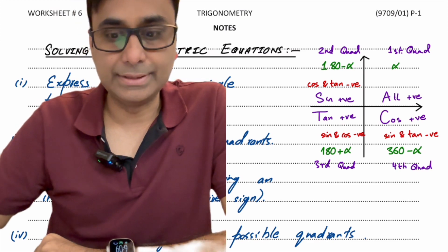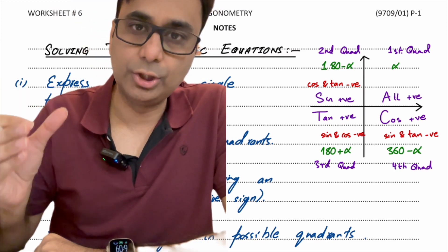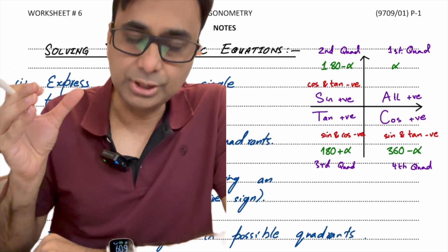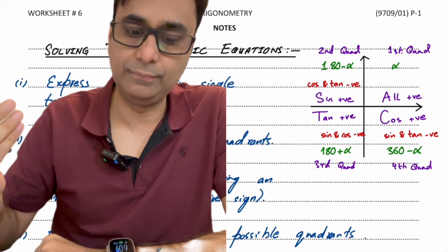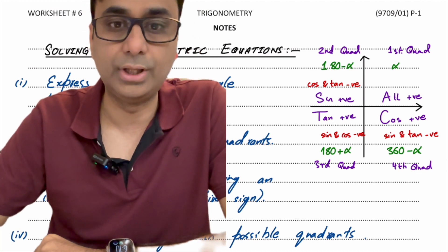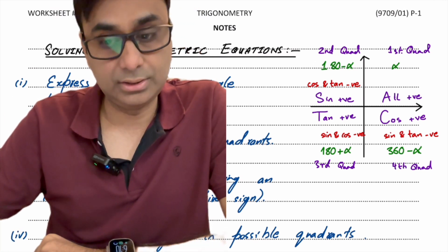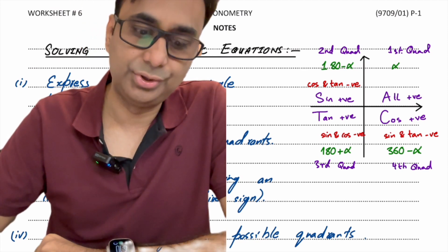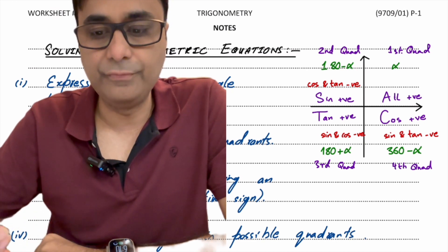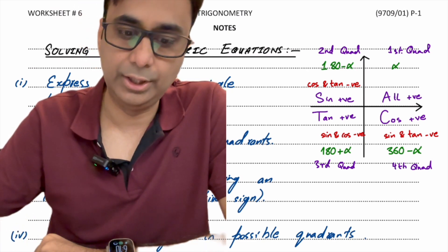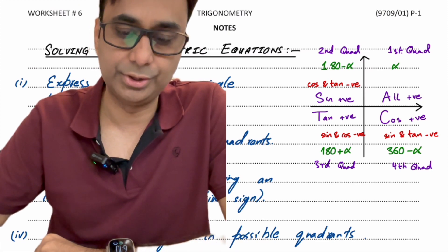The good thing for us is that we only need to solve trigonometric equations for a particular range of values. They will be given an interval and we solve the equation for that particular interval. But we still would not generally have just one solution, so we have to account for every single possible value in the range that satisfies the equation.